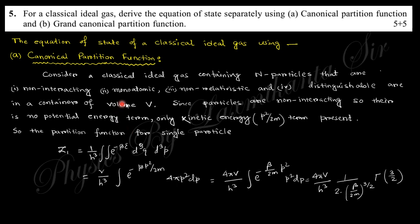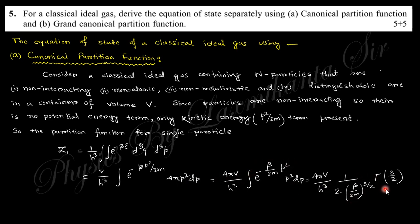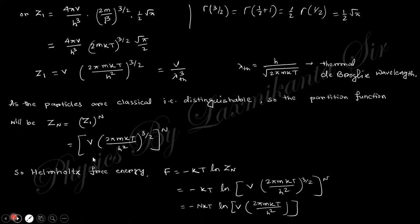Consider an ideal gas consisting of N particles which are monatomic, non-relativistic, and distinguishable, contained in volume V. Since the particles are distinguishable, the partition function for a single particle is (1/h³) times the integral of exp(-β·ε) dq dp, where q is the generalized coordinate and p is the generalized momentum. The energy is p²/2m (no potential energy, only kinetic energy). Integrating over d³q (volume V) and d³p = 4πp²dp gives you V divided by the thermal de Broglie wavelength cubed.